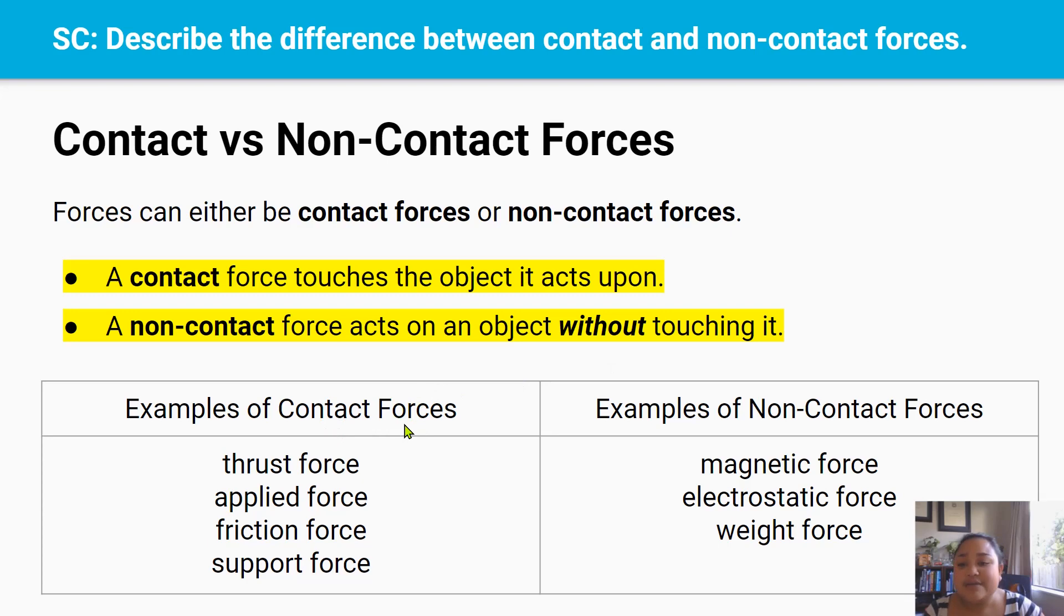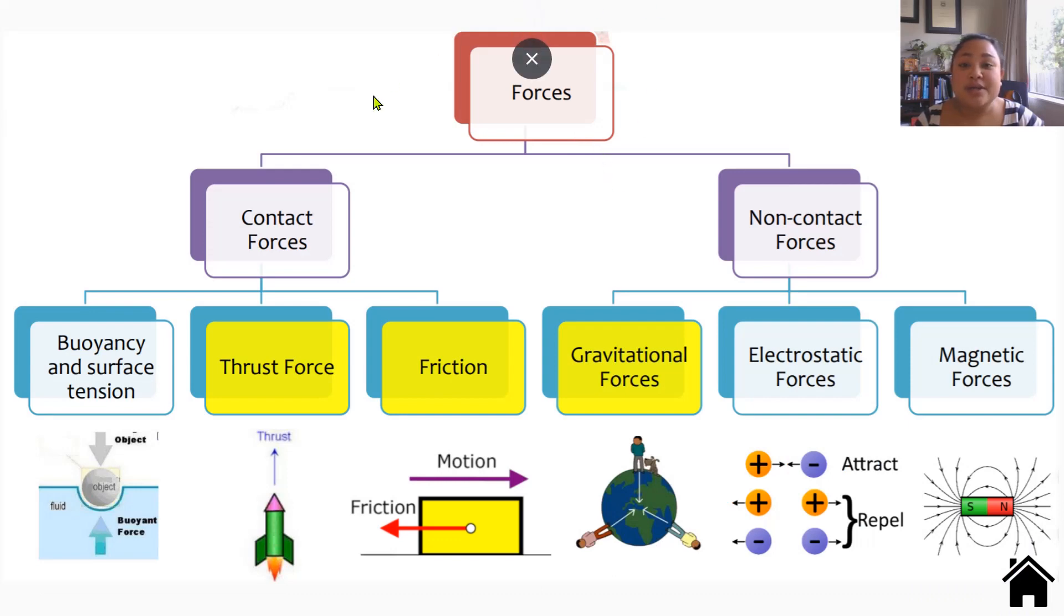So examples of contact forces, so forces that have to touch an object for it to act on it, are a thrust force, applied force, friction force, and support force. And examples of non-contact forces are magnetic force, electrostatic force, and weight force that's produced by gravity. And here's a diagram showing you that there's two types of forces, contact forces and non-contact forces. And under the contact forces bracket, you have some examples like buoyancy, thrust force, friction force, and under this non-contact bracket, you've got gravitational forces, but we call that weight force, electrostatic forces, and magnetic forces. You can keep referring to this really cool diagram throughout the physical world.